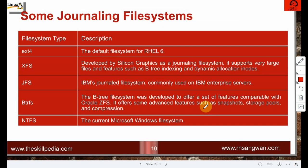ext4 was the default in RHEL6; XFS is the default in RHEL7, developed by Silicon Graphics for a general-purpose file system — it supports very large files and features like B-tree indexing and dynamic inode allocation. JFS is IBM's general file system, commonly used for IBM enterprise servers. btrfs is a general-purpose file system developed to offer features comparable to Oracle ZFS, and is the default on SUSE Linux Enterprise Server. NTFS is Microsoft Windows' file system.